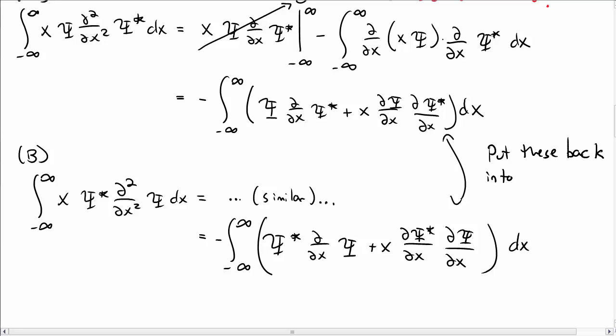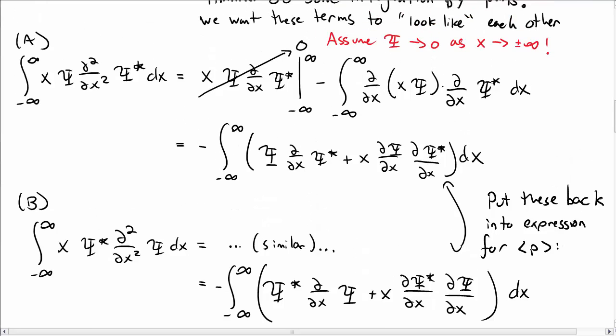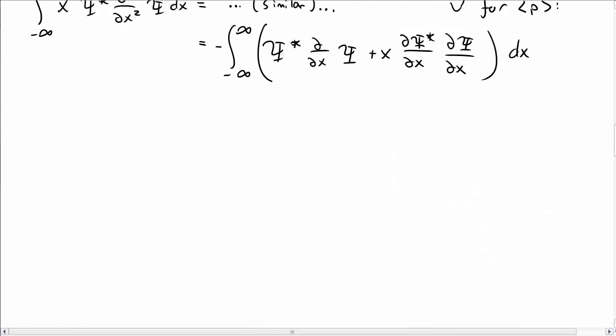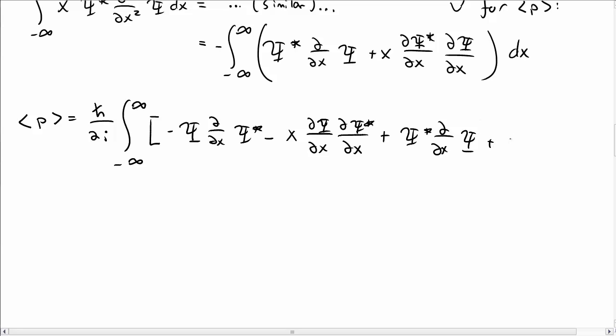Now we're going to put these expressions back into the expression we had for the expectation value of momentum for terms a and b. The expectation value of momentum comes with this pre-factor h bar over 2i, we've got the integral, and then we've got term a which is this, and then we have term b. Keeping track of my minus signs here. Hey look, these two terms cancel.